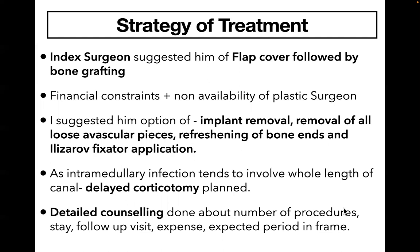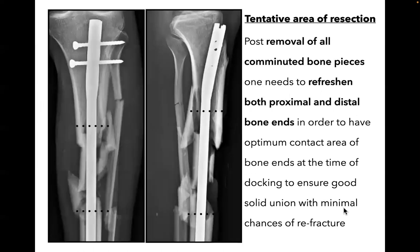Detailed counseling was done with the patient regarding the number of procedures, hospital stay, follow-up visits, expenses, and expected time in frame. The dotted black lines suggest the tentative area of resection. Once we remove all loose avascular pieces, the bone ends will have an irregular surface, and if such an irregular surface comes in contact at the time of docking, they will not have an optimal surface area. So it is better to refresh the bone ends at the index surgery so that at docking the patient will have optimal bone surface contact area, leading to solid union and minimal chance of re-fracture.